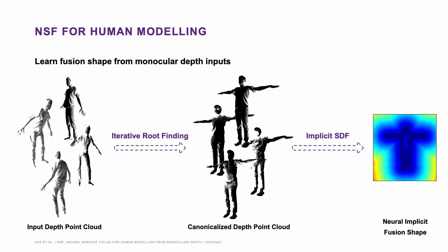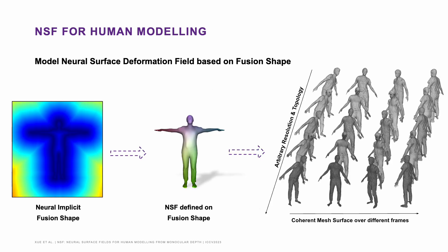How do we utilize NSF to model humans? The first question is how to obtain the surface to define NSF. We use iterative refining to canonicalize input depth point clouds, and then we use a neural network to model the complete canonical shape implicitly using a distance field. After we have the implicit canonical shape, we can define the neural surface field on top of it.